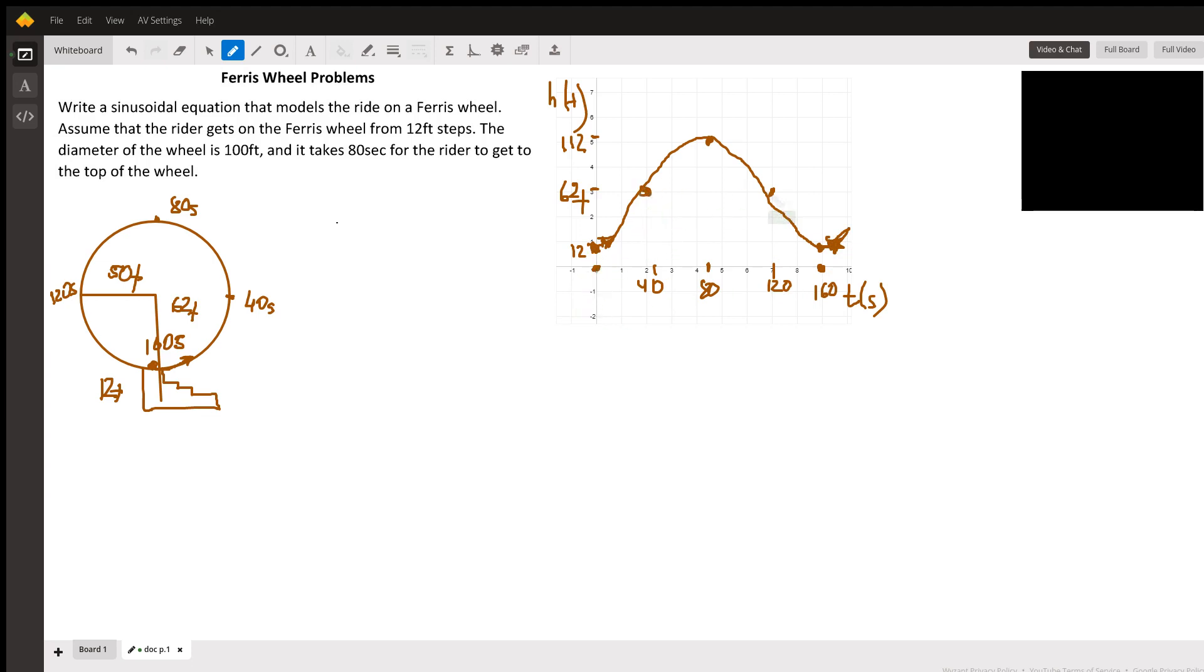Where is the central line of this function? It goes through 62 feet, so it's shifted up by 62.